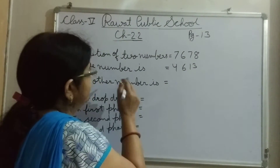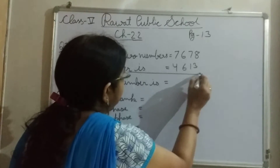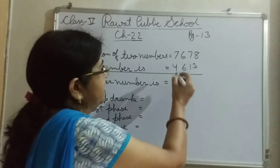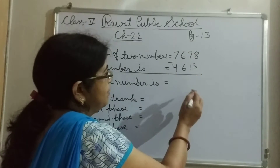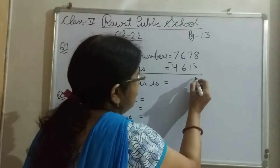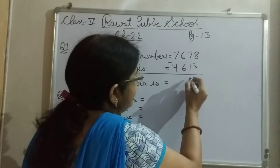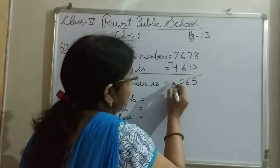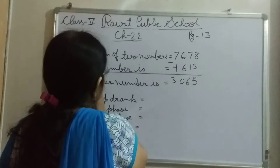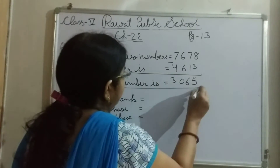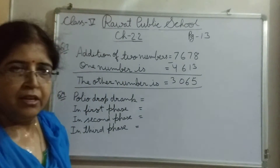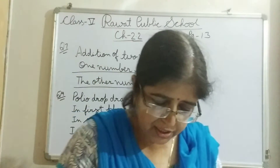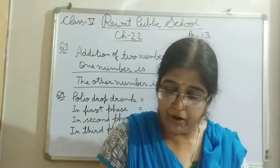तो क्या करेंगे - जो one number दिया है उसको two numbers के sum में से minus कर देंगे. 8 minus 3 = 5, 7 minus 1 = 6, 6 minus 6 = 0, 7 minus 4 = 3. It means the other number is 3,065.